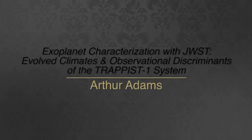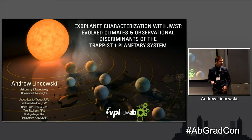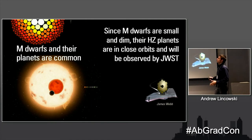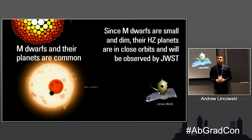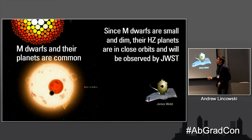Thanks for the introduction. I'll be explaining characterization with James Webb, particularly focused on the TRAPPIST-1 system. I'll zip through the introduction because I have a lot to show. The key big picture is that M-dwarfs are about three-quarters of the stars in our local group, so if you're thinking about the distribution of life as an astrobiologist, you want an idea about where life might exist in the local universe — and chances are good you'll be looking at M-dwarf planets.